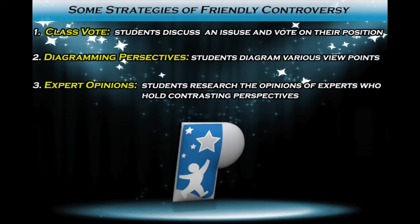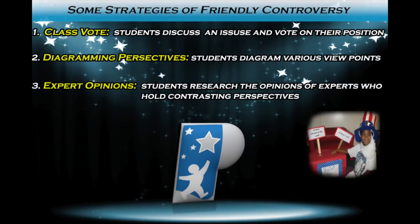Here are three strategies of friendly controversy. First, class vote: students vote on a particular issue. Before and after the vote, students discuss the merits of various points. To incorporate movement, the teacher can have students stand on particular sides of the classroom to represent their vote.